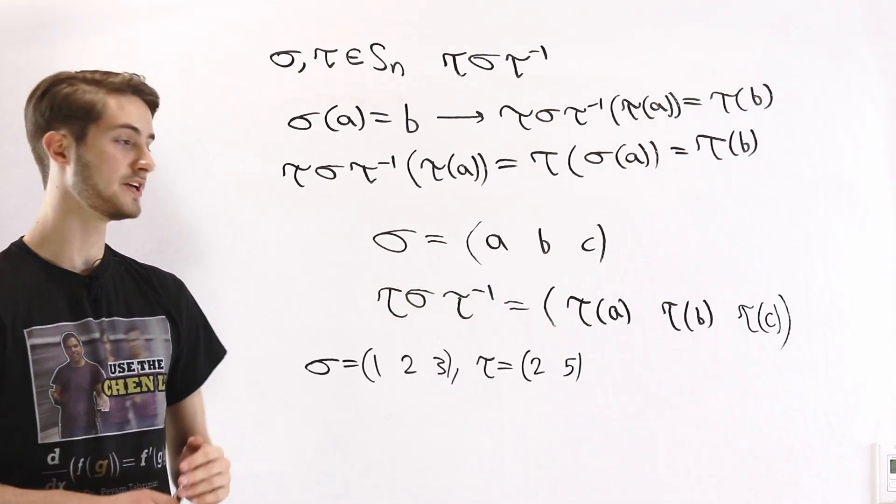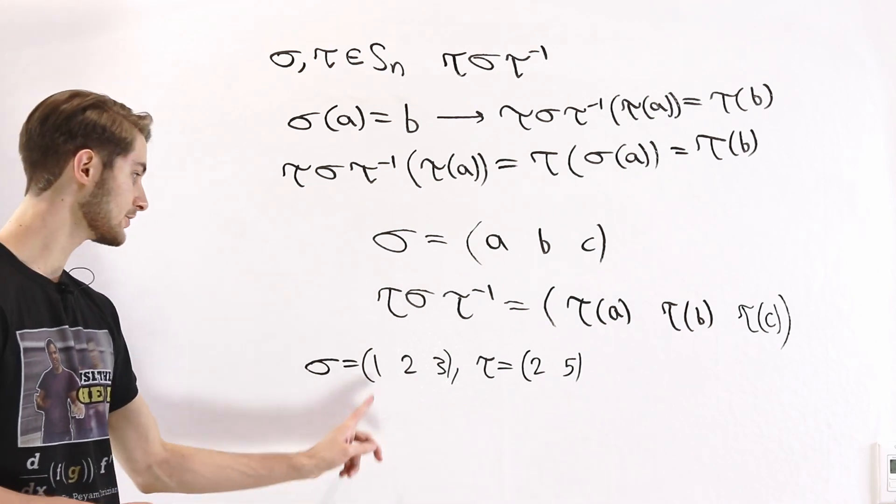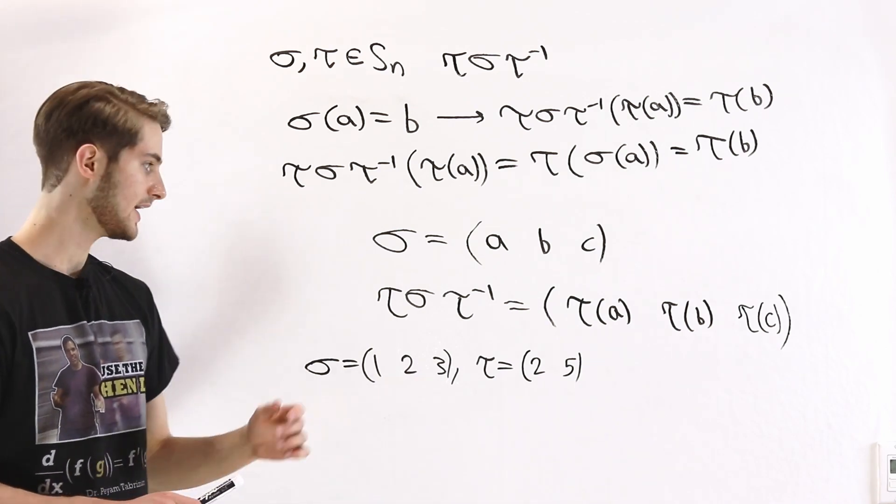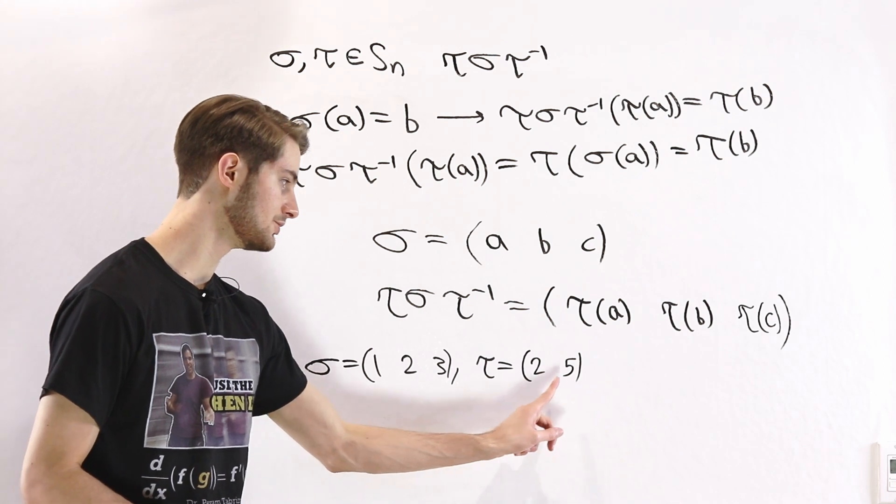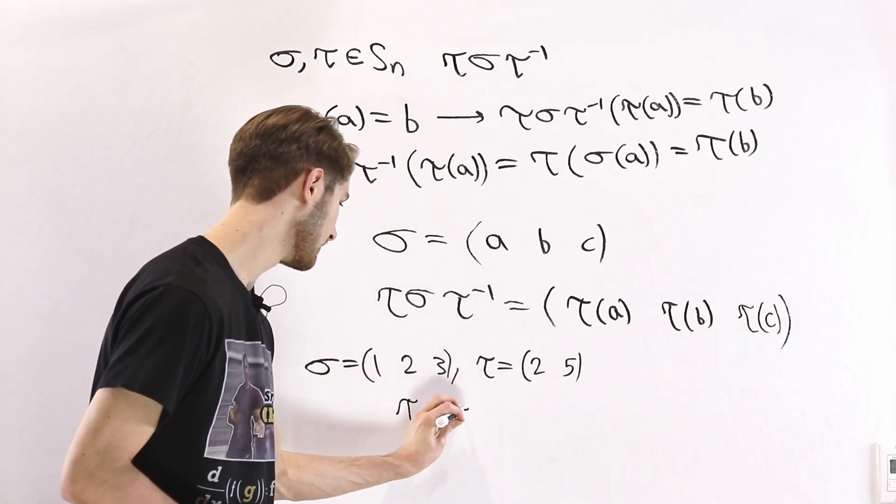Let's look at a specific example of what's going on here. Say that we have sigma being the 3 cycle 1, 2, 3, and tau being the transposition 2, 5. What is tau sigma tau inverse?